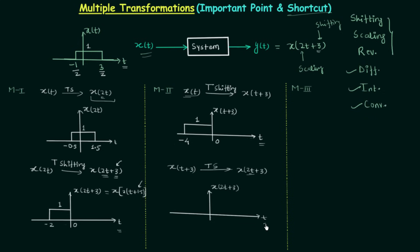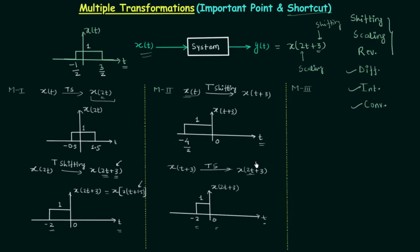Since the x-axis is t, there is no problem — we simply multiply 2 to the x-axis values. Dividing minus 4 by 2 gives minus 2, and dividing 0 by 2 gives 0, with amplitude 1. The final waveform of y(t) is amplitude 1 from minus 2 to 0. Comparing the two waveforms from methods one and two, they are the same. So there is no need to worry about the priority order if you understand how to handle the variable on the x-axis.